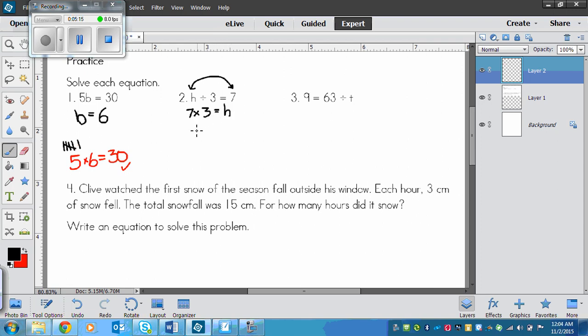When I switch these the sign turns into a multiplying rather than a dividing. Now I can think of it as 7 times 3 equals h. So now I know that h equals 21 because 7 times 3 equals 21. We can check to make sure that this is right. We go 21 divided by 3 and that equals 7.